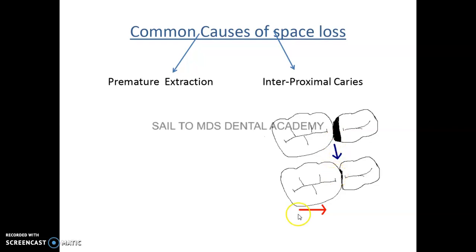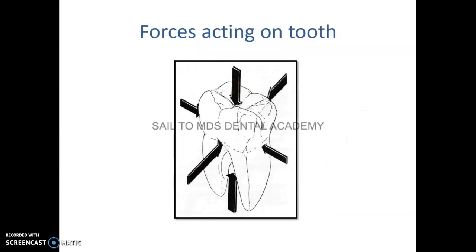The common causes of space loss are premature extraction and interproximal caries. Whenever interproximal caries is present, space loss and migration of teeth will occur. Various forces act on the tooth — muscular forces, eruptive forces, and occlusal forces — all contributing to space loss.